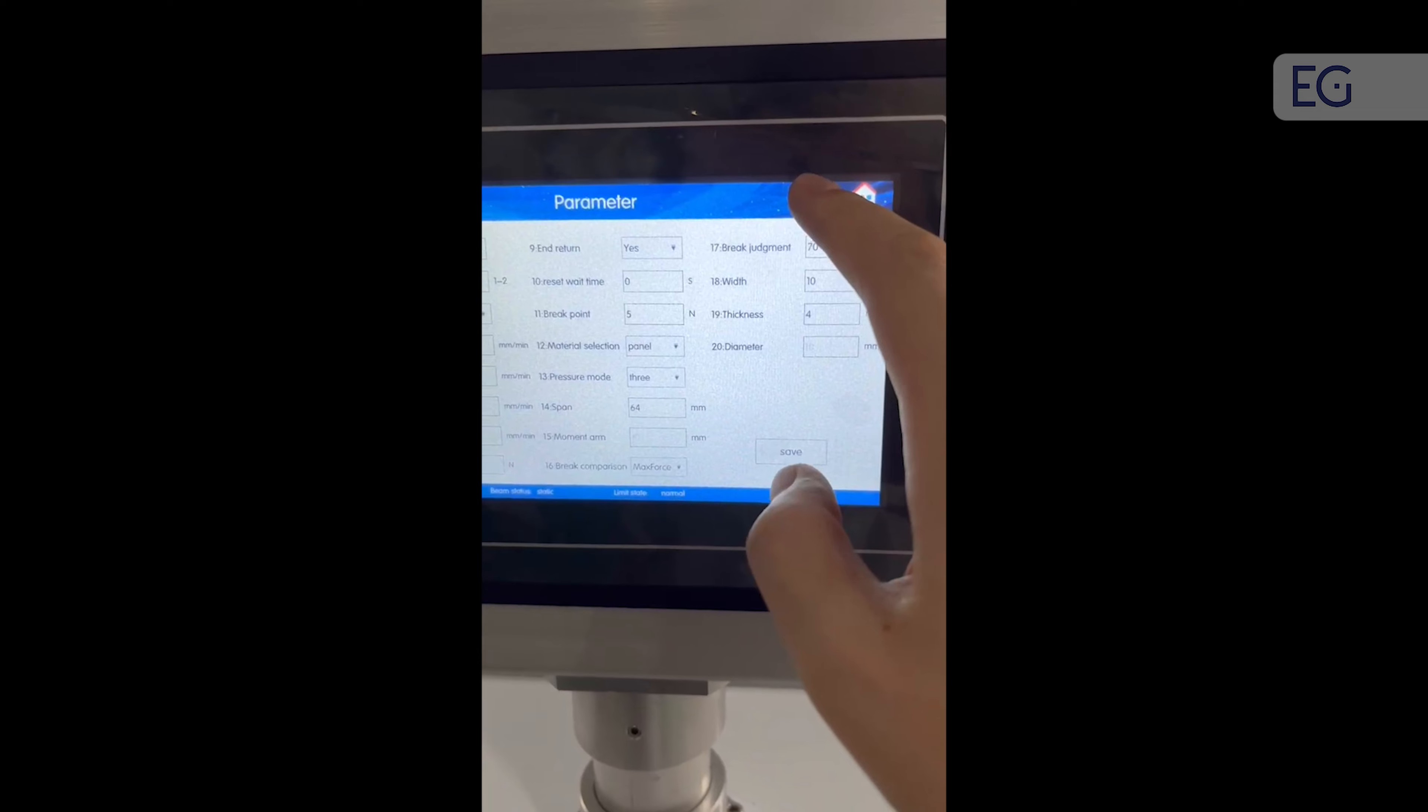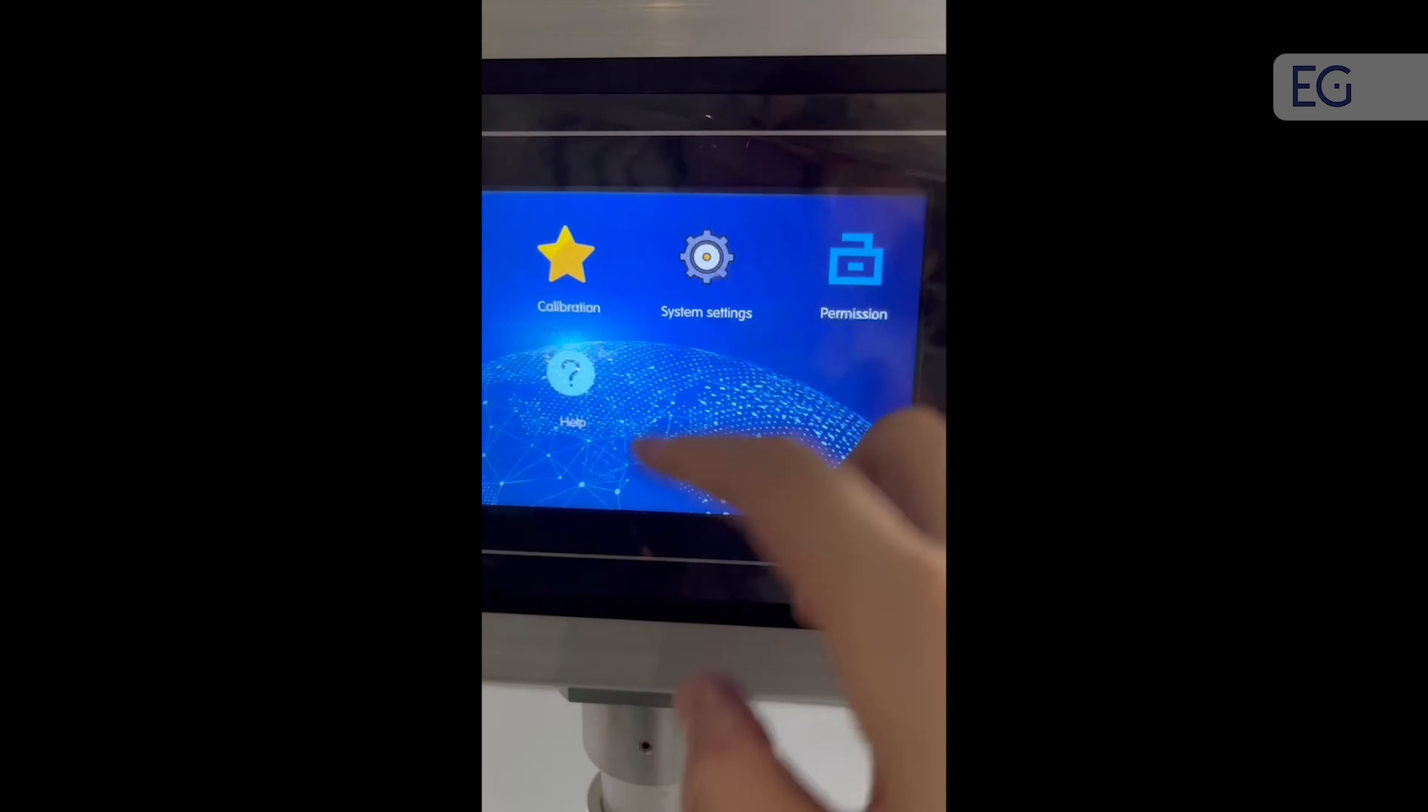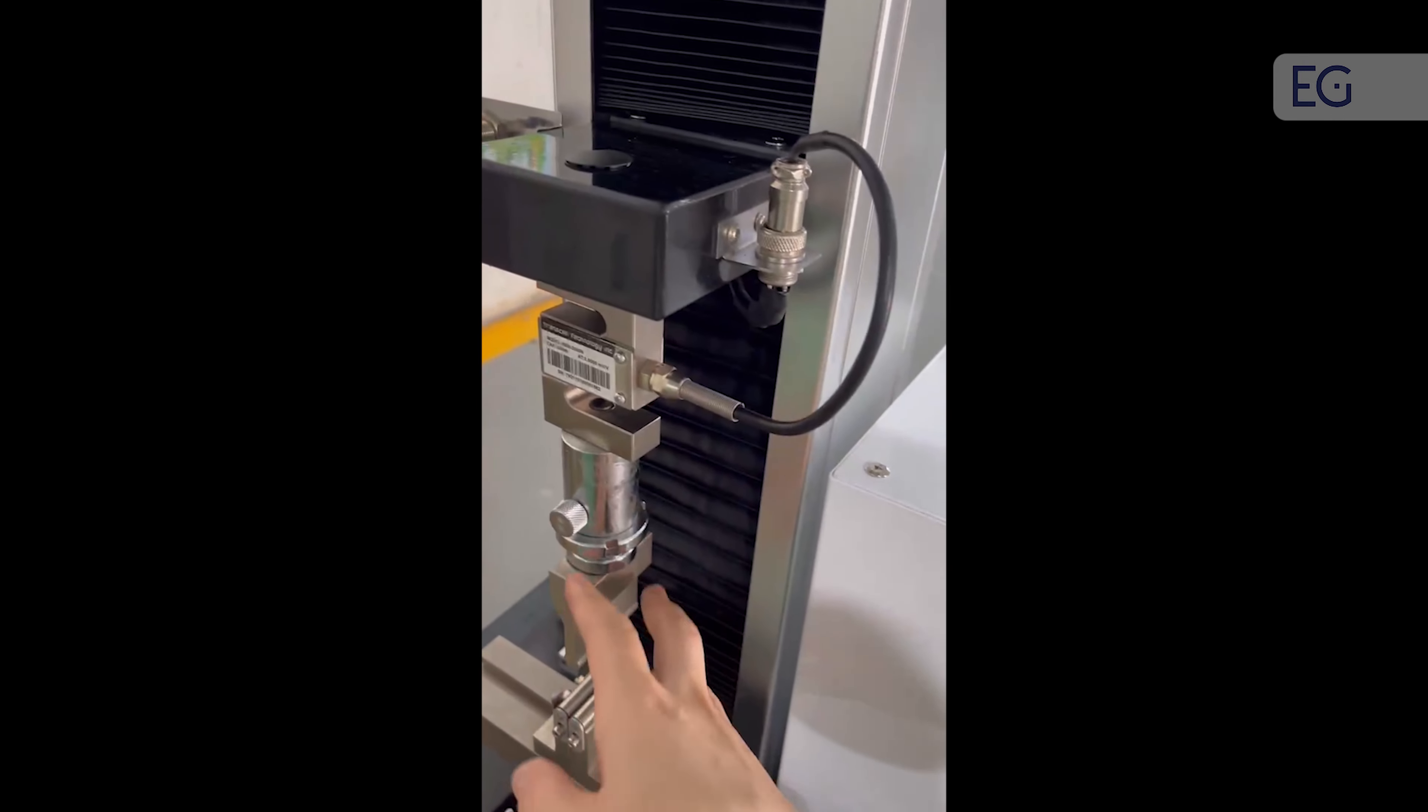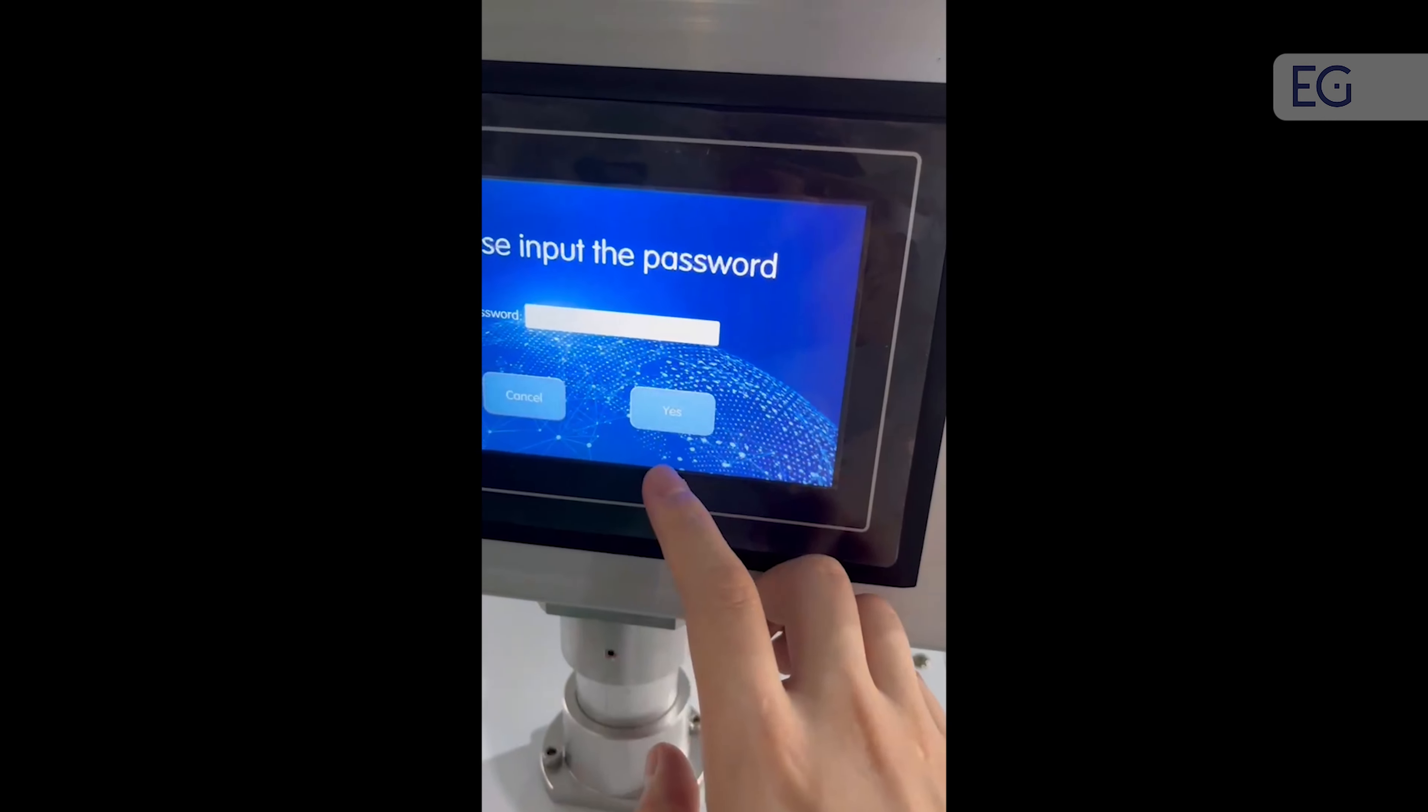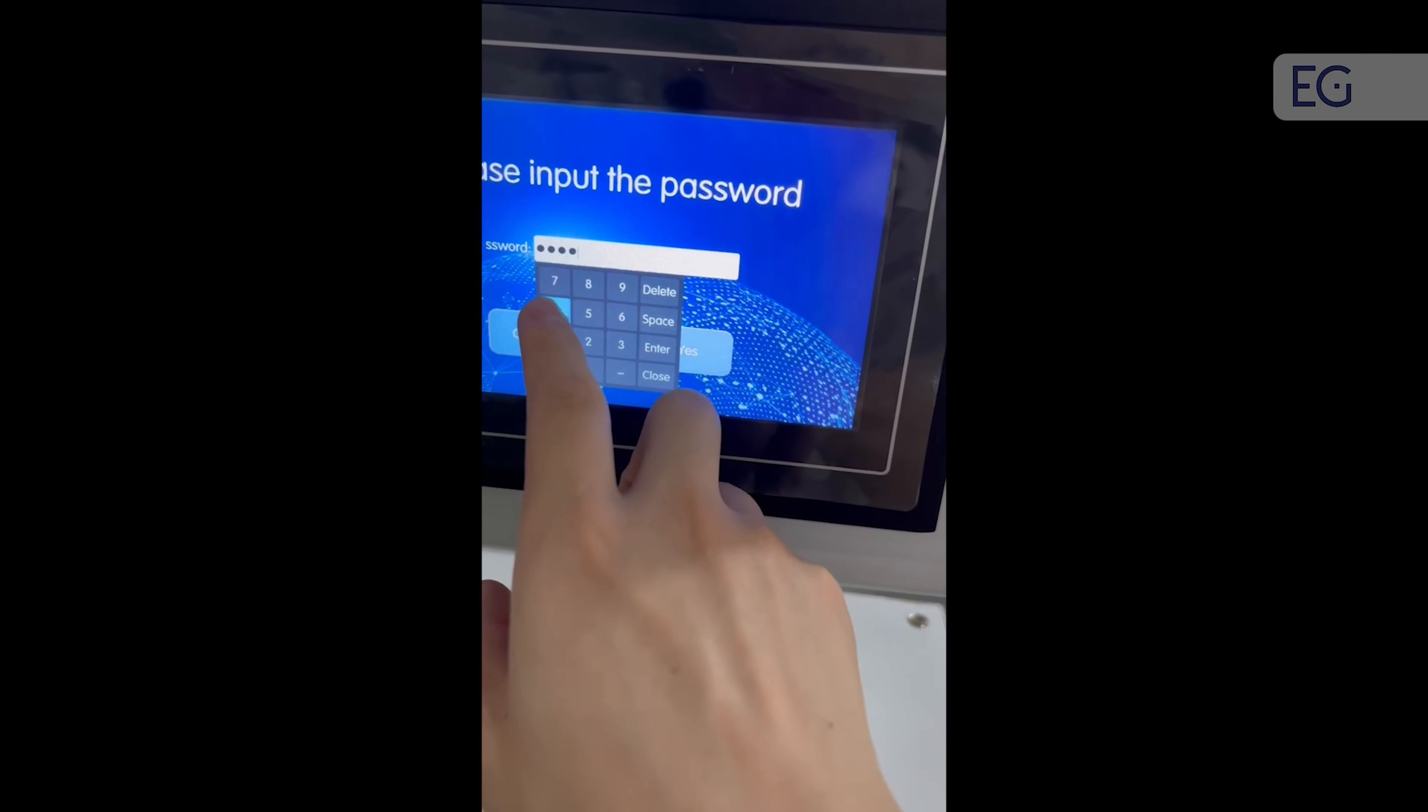Before this, we need to choose the direction. Because for compression and three-point bending, the upper clamp needs to move down. So we need to set in system setting. And the password is one, one, two, three, four.